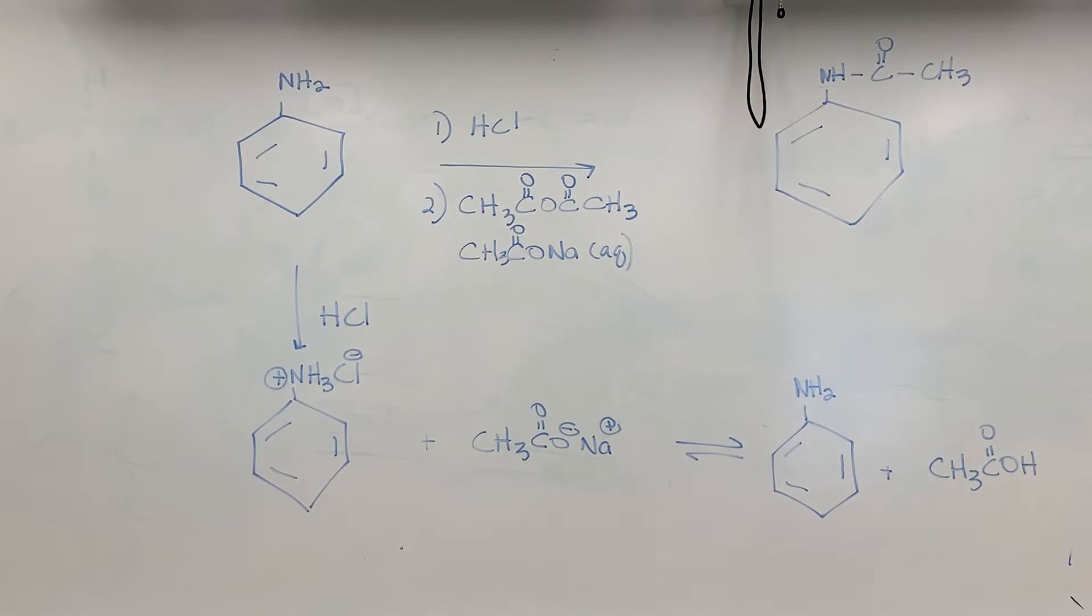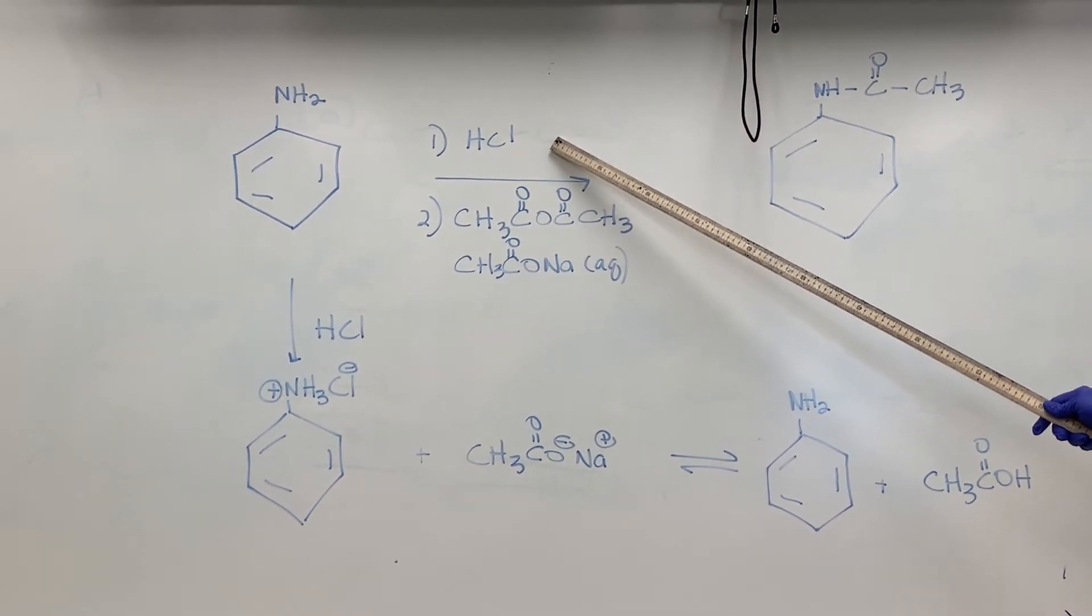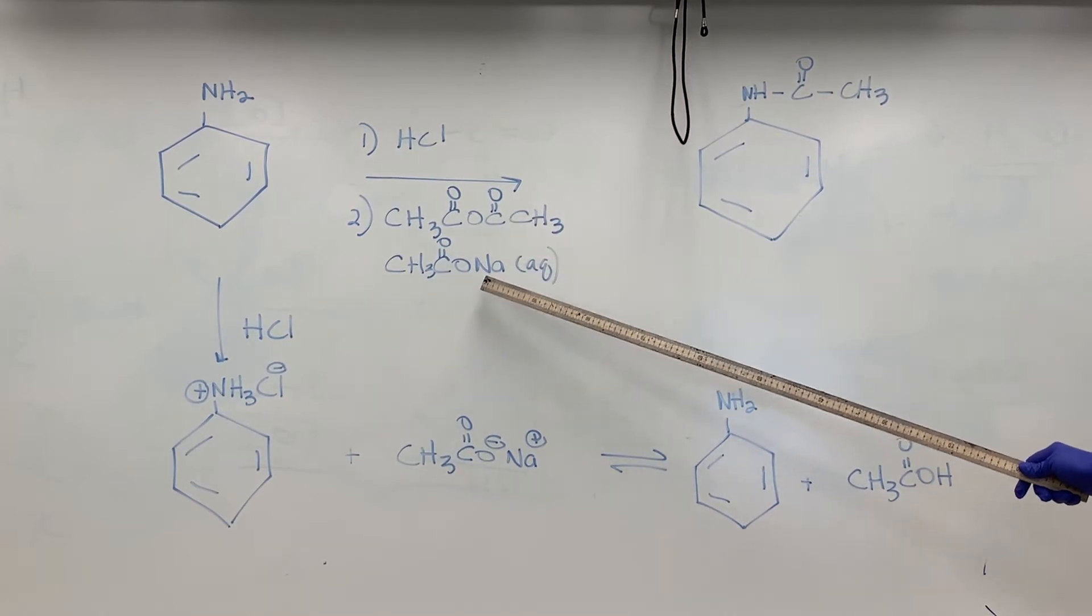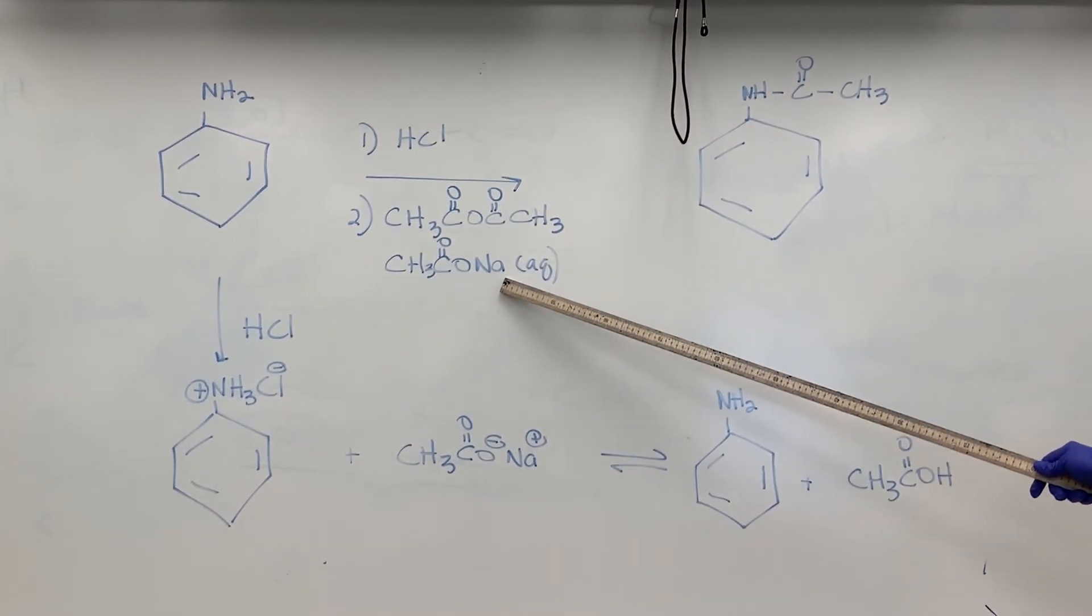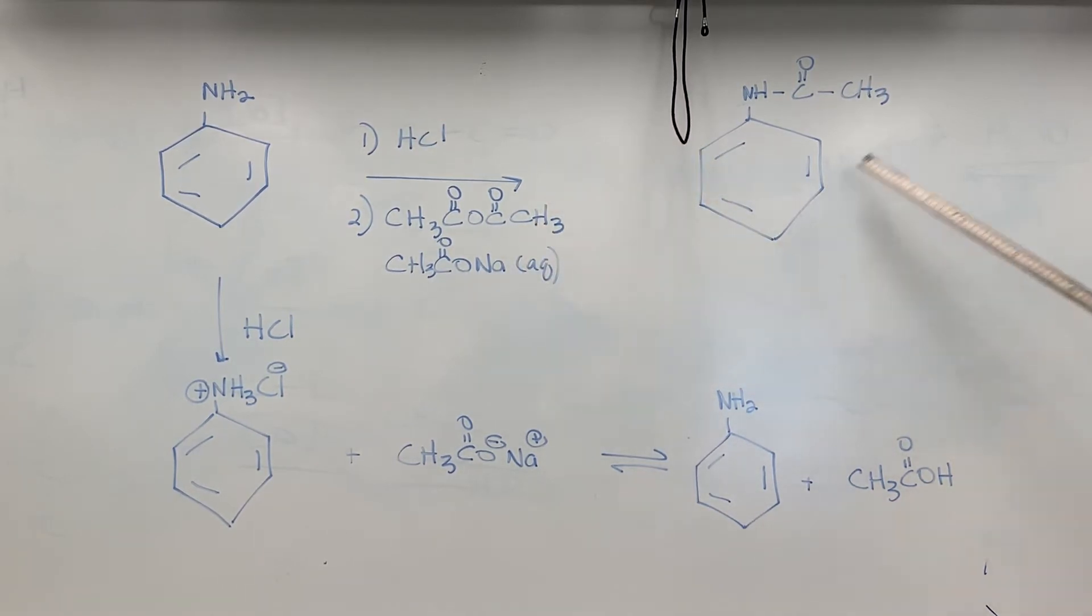Today's lab, we're going to make acetanilide, which is the structure that you see here. We're going to do that by starting with aniline. We're first going to dissolve the aniline in hydrochloric acid solution, and then we will add acetic anhydride followed by sodium acetate trihydrate, and then we'll get our product, the acetanilide.